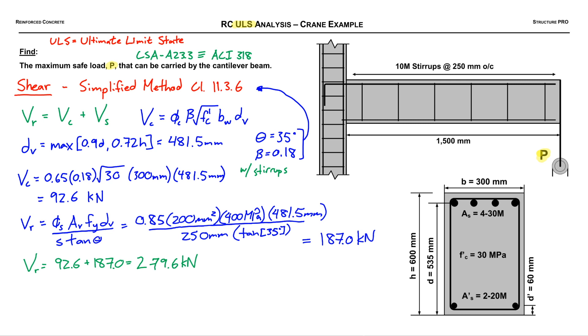We have to back-figure what the load P is. We've got to take out the dead load from that, and we also have to consider the factored load because we're determining the maximum safe load. That means we need load factors, these alpha values. Written down, the equation here: VR equals VF. We're setting them equal to each other, and we have to consider that VF is alpha dead times V dead plus alpha live times V live.